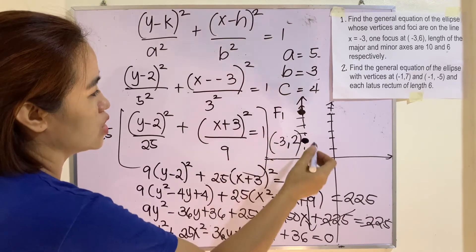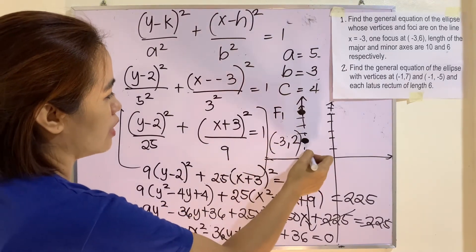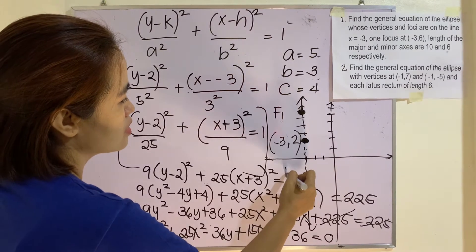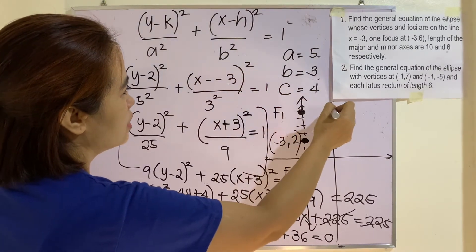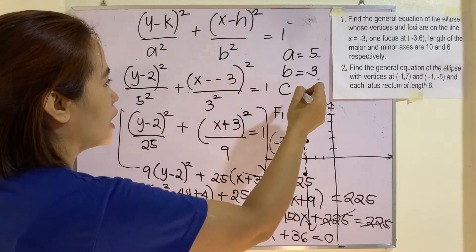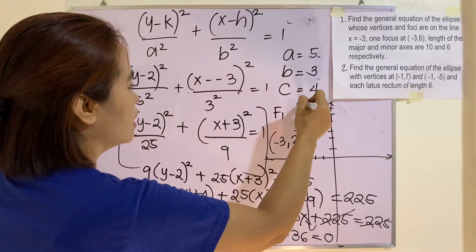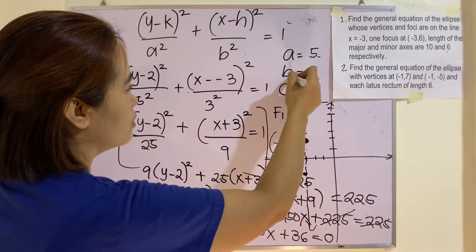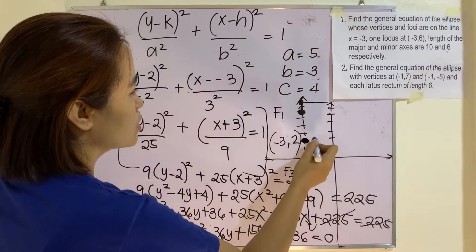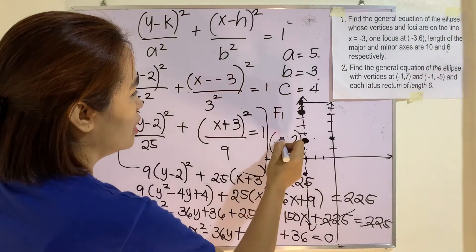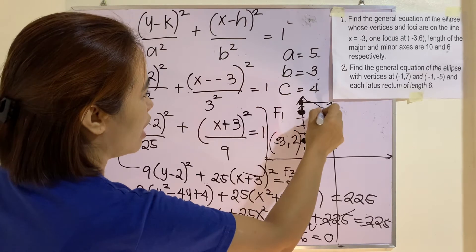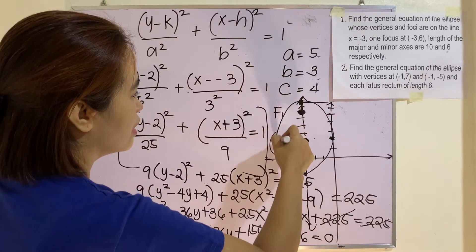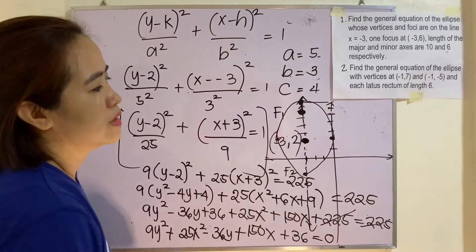If I sketch it, going down 4 from the focus gives F₂. The vertex is 5 units from the center in each direction along the major axis, and the minor semi-axis is 3 units to each side. So roughly, this is the graph. That's it. Example number 2.